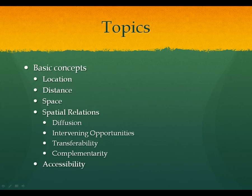Much of human geography is rooted in five concepts: location — where is something; distance — how far is one thing from another; space — what is the area or region of something; spatial relations, which I'll talk more about in a minute; and accessibility — can you get to something, or are there barriers, either physical or cultural.